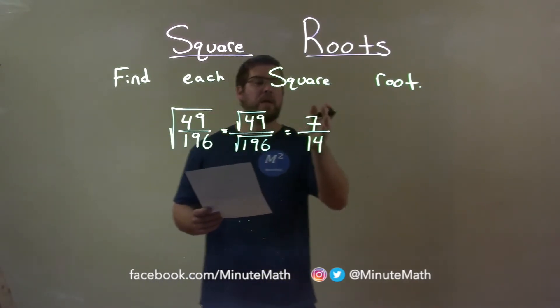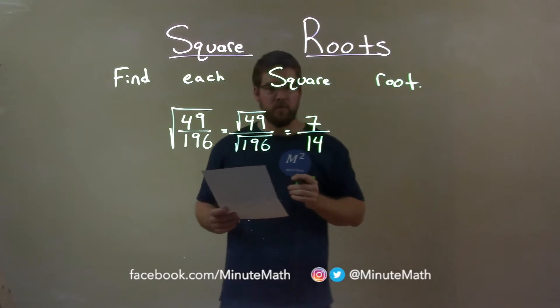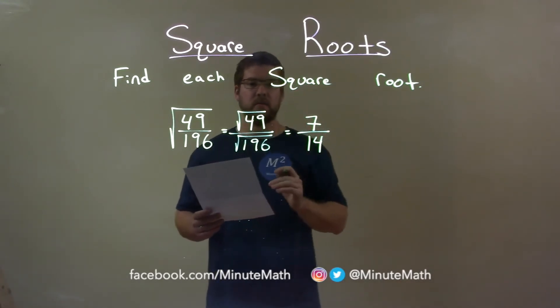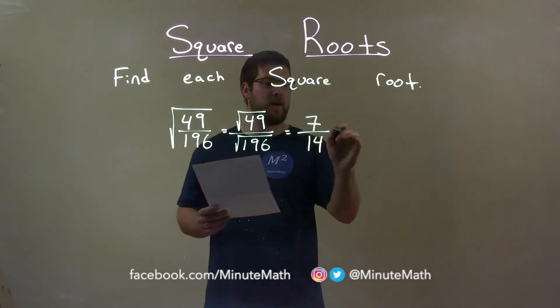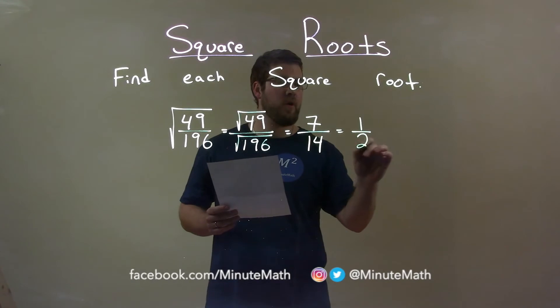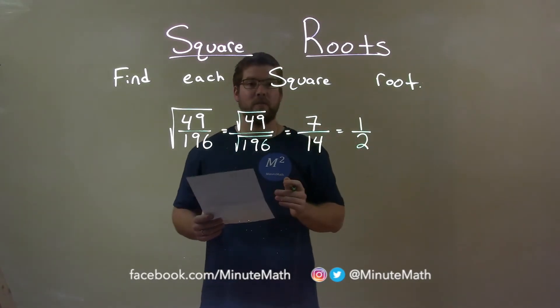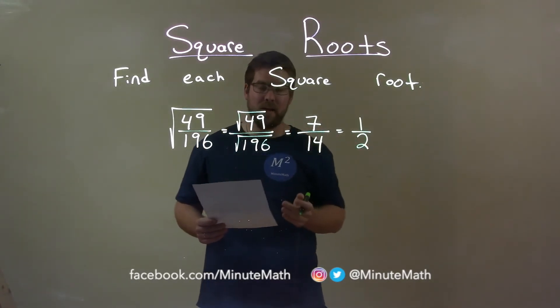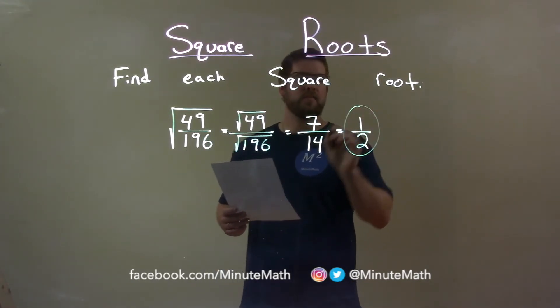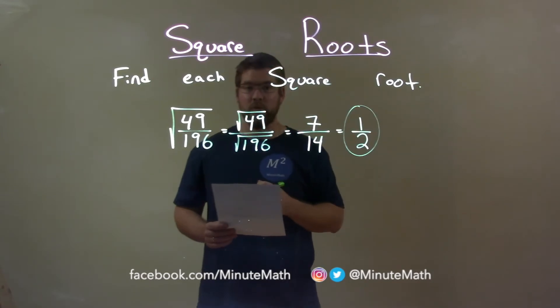And now we can simplify this fraction. 7 over 14 simplifies to be 1 half — both are divisible by 7. And so our final answer is 1 half.